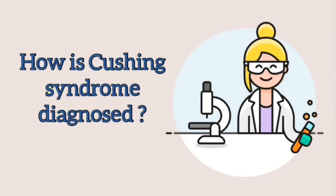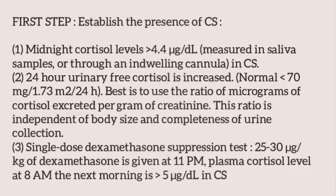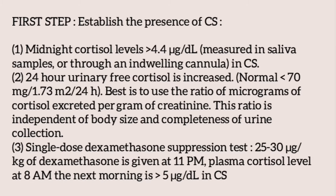The first step in the diagnosis is to establish the presence of Cushing syndrome. Three tests can be used. First is midnight cortisol level, usually measured in saliva — a level more than 4.4 micrograms per deciliter indicates Cushing syndrome. Second is 24-hour urinary free cortisol, which is increased; the normal reference range is less than 70 mcg per 1.73 m² per 24 hours. It is best to use the ratio of micrograms of cortisol excreted per gram of creatinine, as this is independent of body size and completeness of urine collection.